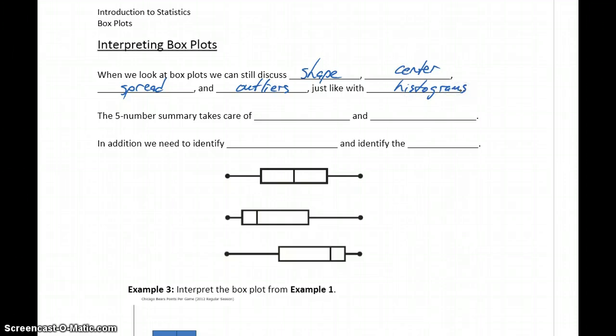The five-number summary takes care of our center, which is that value Q2 or the median, and our spread. Because once we have that five-number summary, we have Q3, we can subtract Q1, and get that interquartile range. So the five-number summary is going to take care of those values for us.